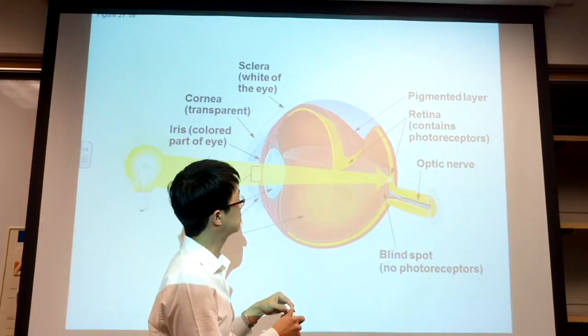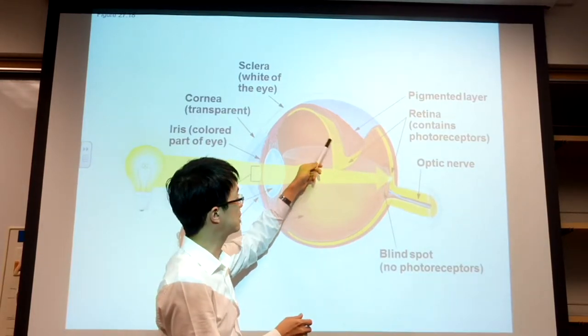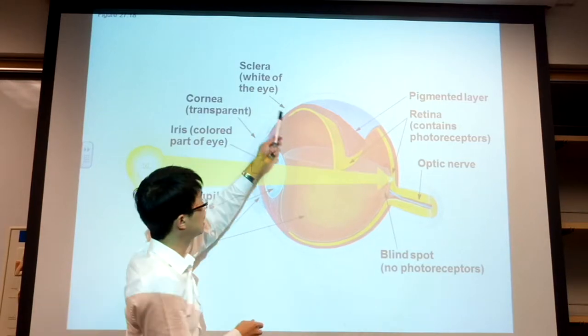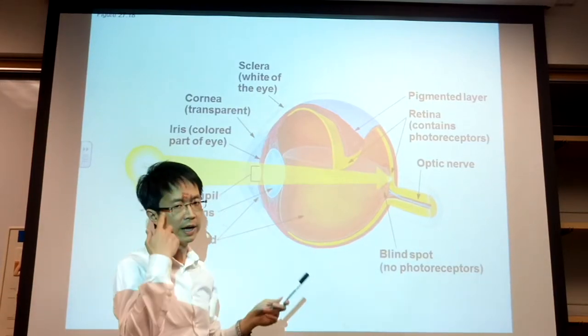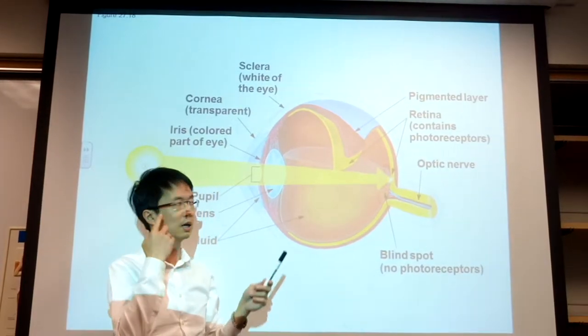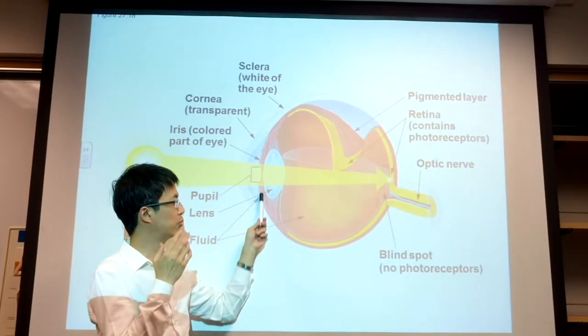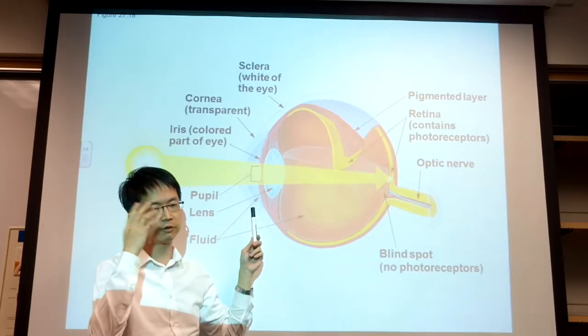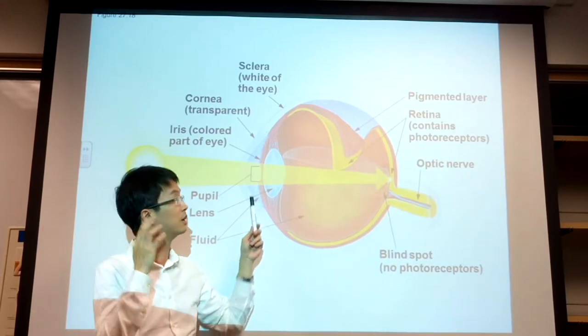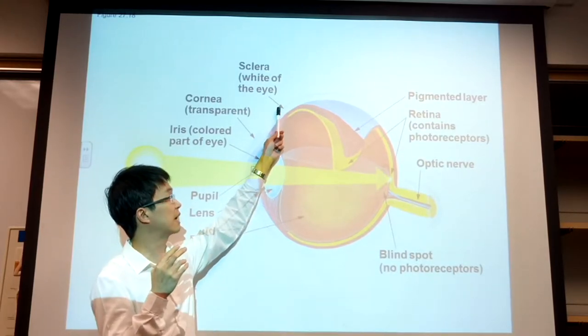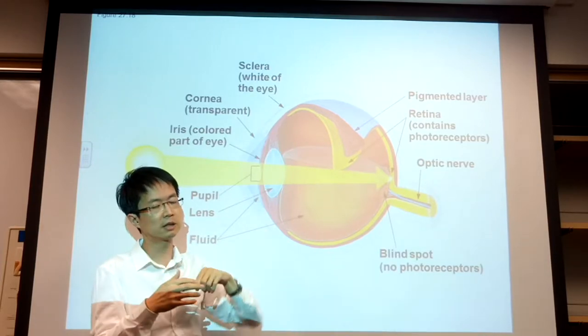There's a pigmented layer and sclera. If you look at your eyes after the iris—the iris gives you the color of your eyes—outside of your eye you see the white stuff. These are called the sclera. Sclera is a tough membrane that encloses most of the eye.